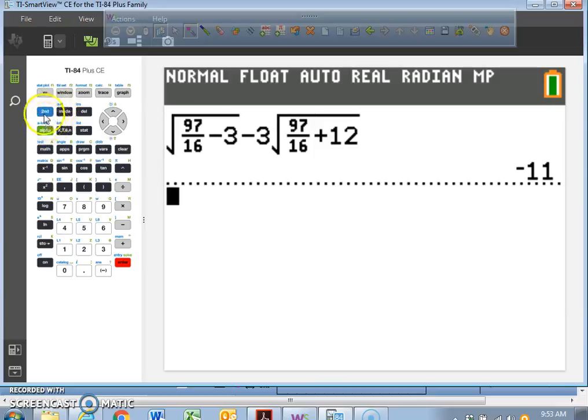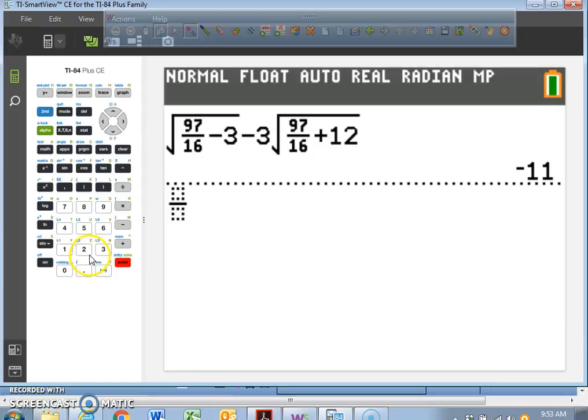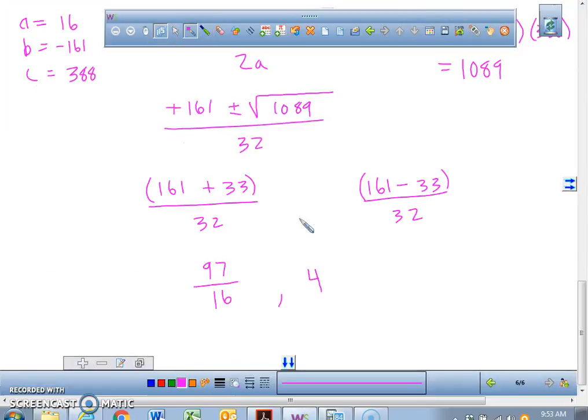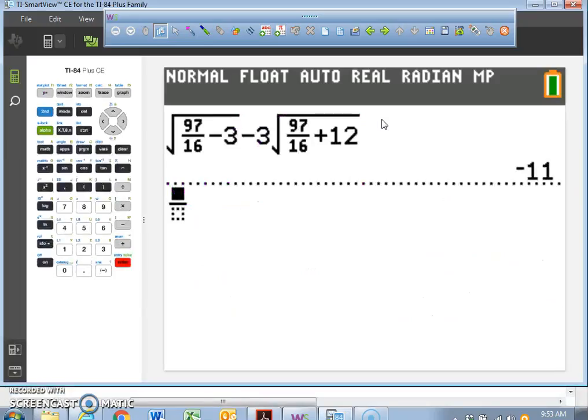One answer will be 97 over 16 if you reduce the fraction, and one answer will simply become 4. So you're going to put the solution set with brackets: 4 and 97 over 16. By the way, both of these answers work.